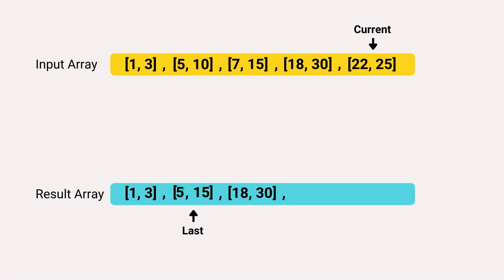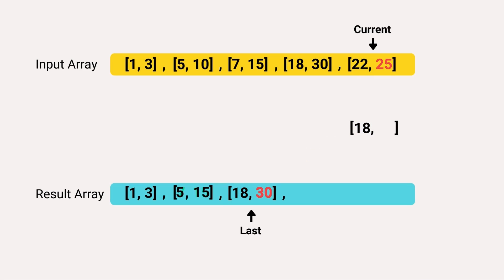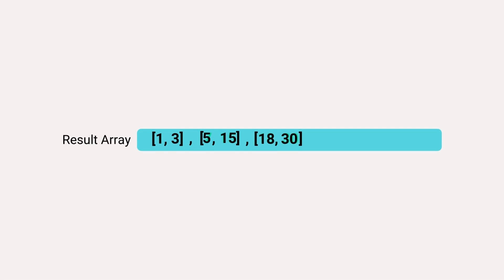In the final iteration, the current interval has a start of 22 and an end of 25. The last interval has a start of 18 and an end of 30. The start time of the current interval is less than the last interval's end time, indicating they are overlapping and should be merged. The merged interval has the start time of the last interval — 18 — and the end time is the maximum, which is 30. We add this merged interval to the result array. Now we have checked all intervals and the output of non-overlapping intervals is complete.